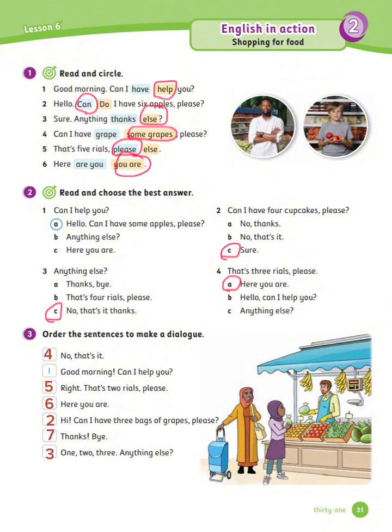Number 3: Anything else? Number 4: No, that's it. Number 5: That's 2 riyals, please. Number 6: Here you are. Number 7: Thanks, bye.